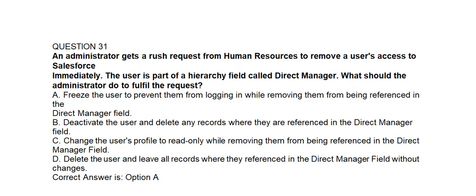Question number thirty-one. An administrator gets a rush request from human resources to remove a user's access to Salesforce immediately. The user is part of a hierarchy field called Director Manager. What should the administrator do to fulfill the request? Option A: Freeze the user to prevent them from logging in while removing them from being referenced in the Direct Manager field. Option B: Deactivate the user and delete any records where they are referenced. Option C: Change the user's profile to read only. Option D: Delete the user and leave all records unchanged. Correct answer is Option A: Freeze the user.